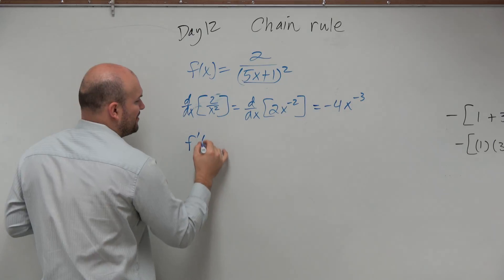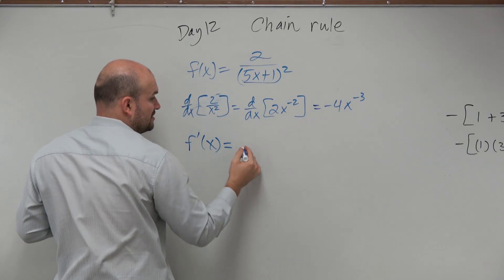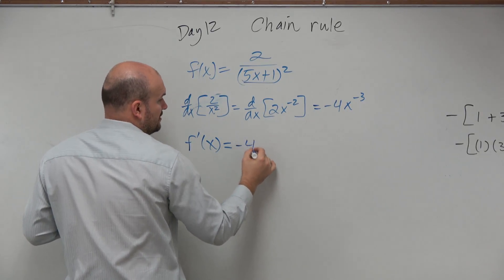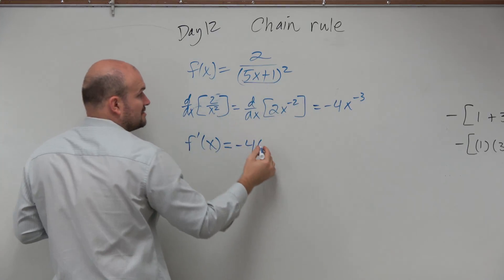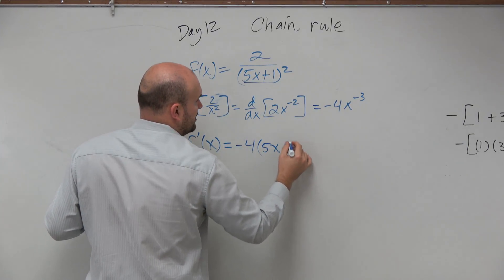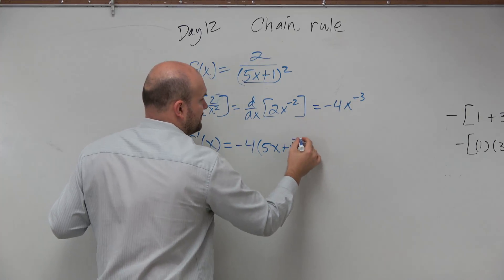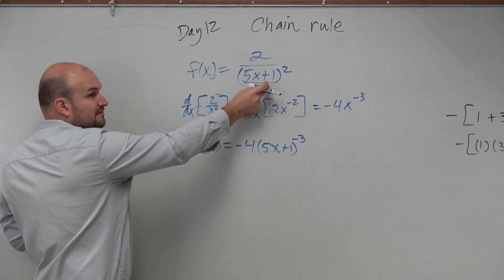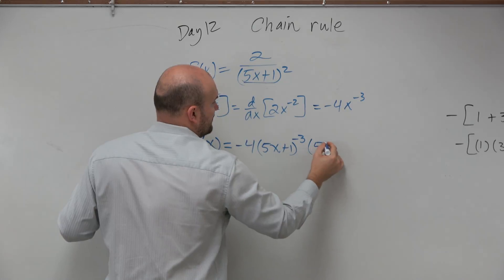So if I'm going to find f prime of x, then I know I'm going to take this function, which is my f prime of x, negative 4. I'm going to plug in my g of x, which is 5x plus 1, raised to the negative third. And then I'm going to multiply it by the derivative of my inside function, which is just 5.